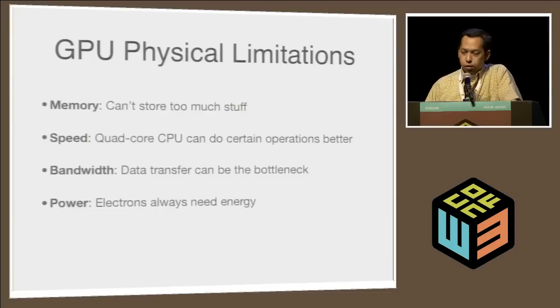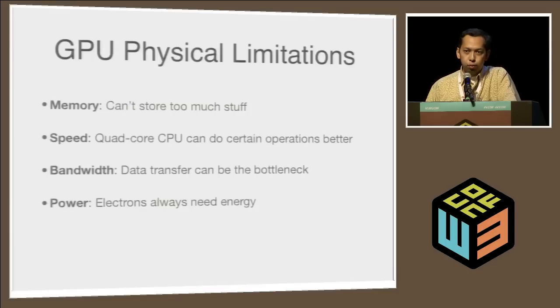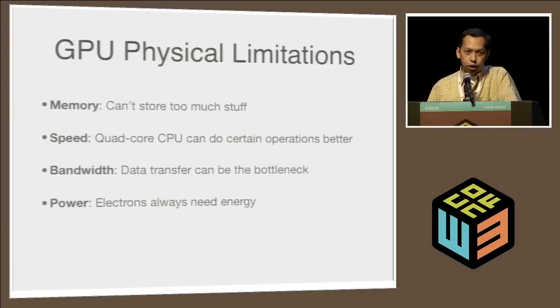To take a GPU optimized for games and use it for web page rendering, we need to be aware of all the limitations. Memory is always limited — this is a physical problem. Speed is also a factor, because GPU is not designed for general-purpose computing; in some cases, the CPU can render things faster. And there's always a bandwidth problem — the connection between GPU and CPU is not free, it's a small pipeline with limited capacity. And of course, electrons need power — as soon as you trigger the GPU, it requires energy.